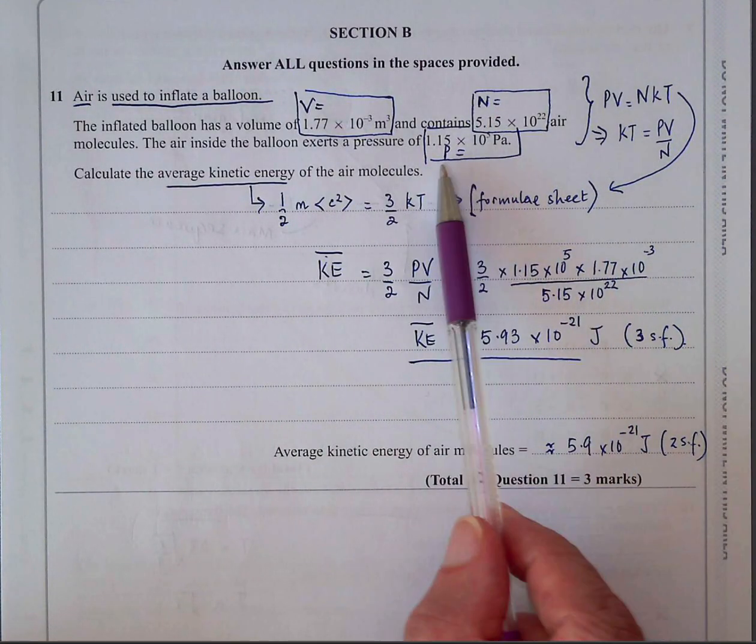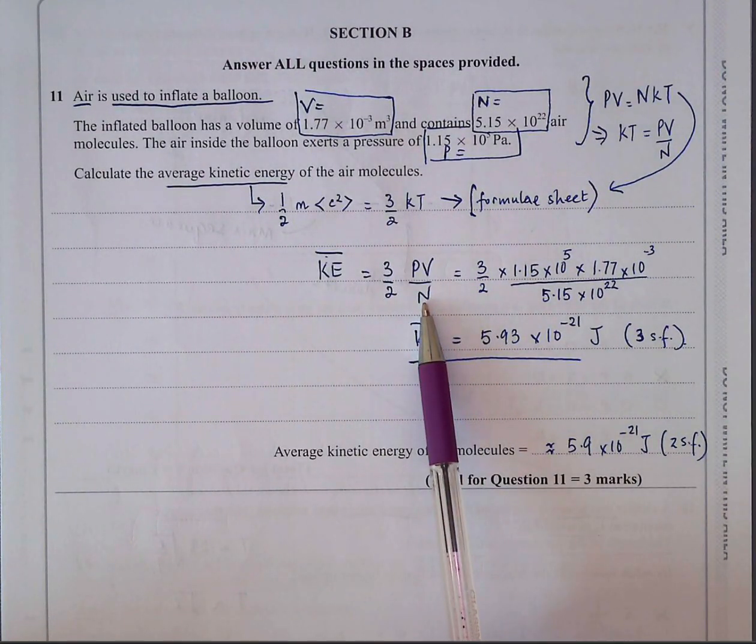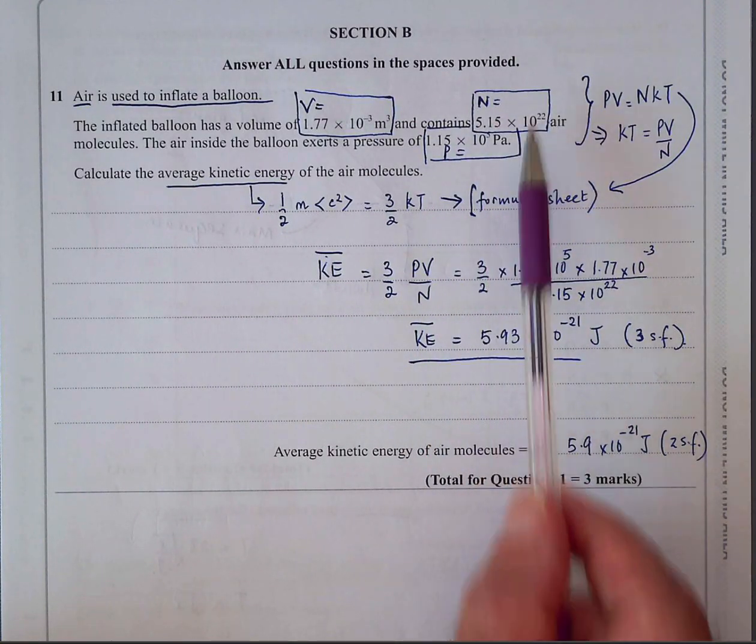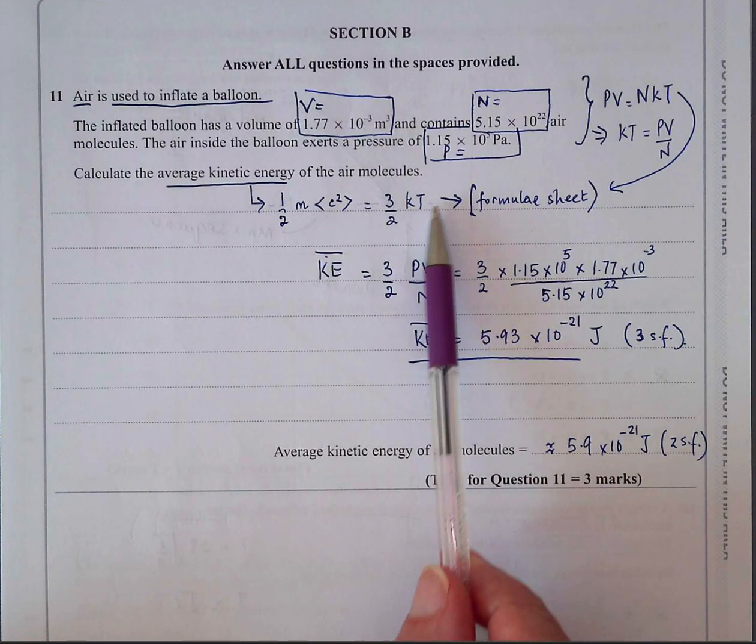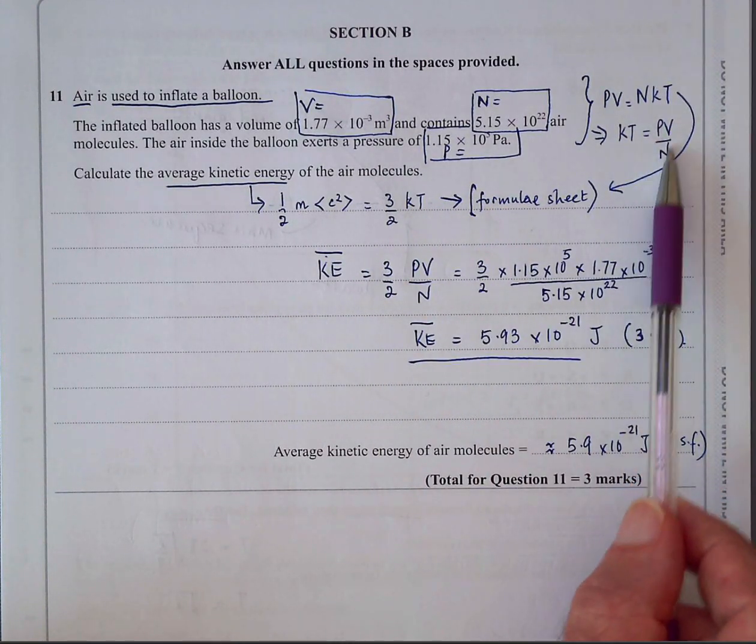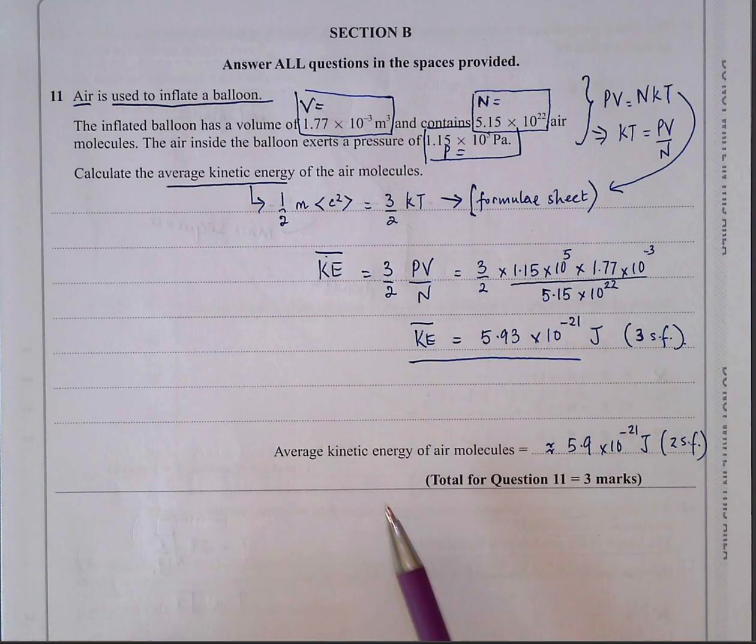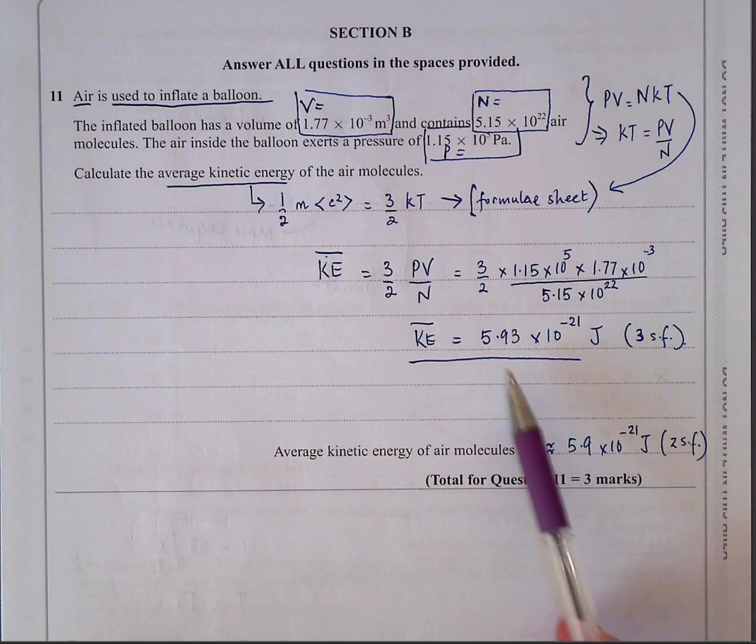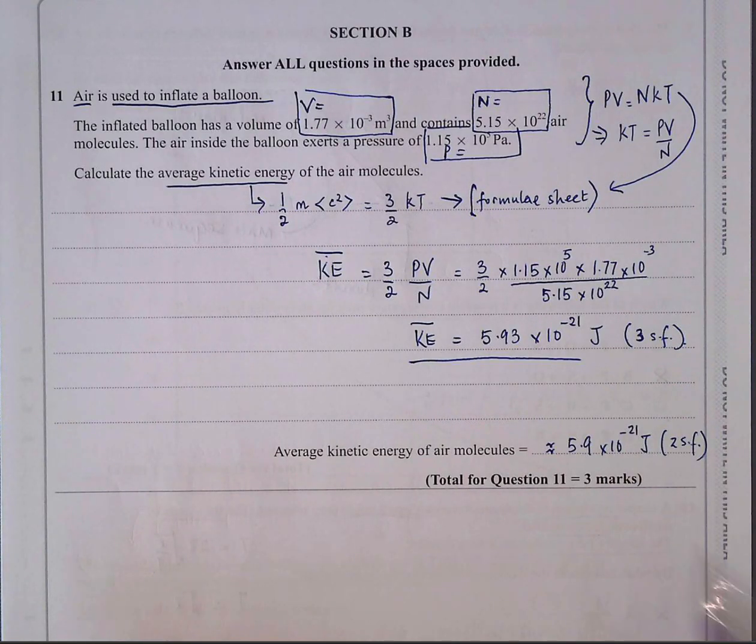So pressure we know is here. Volume is given here and N is given here. So we know all three values and the average kinetic energy is three halves of KT, which equals three halves of PV over N. Using the algebra I just explained, put the numbers in, you get the answer in joules and three significant figures is 5.93.